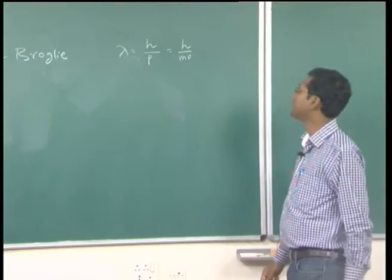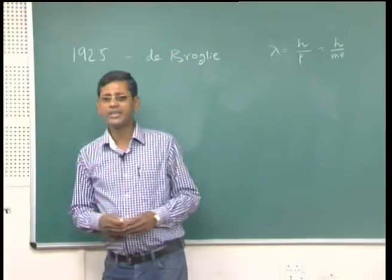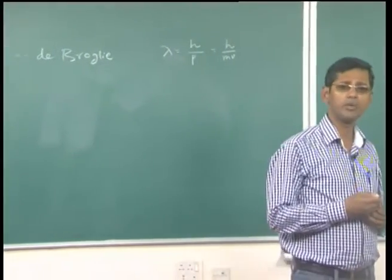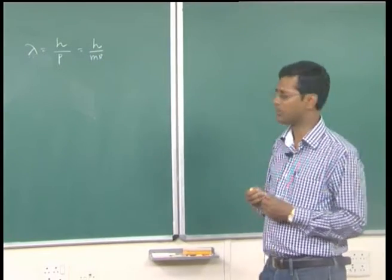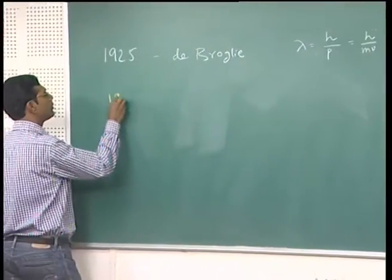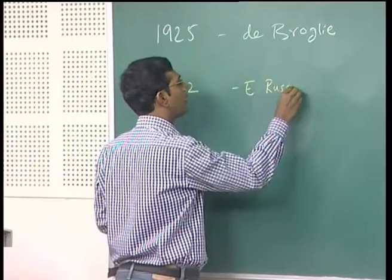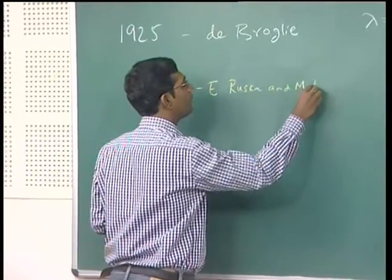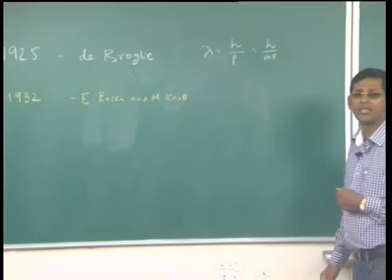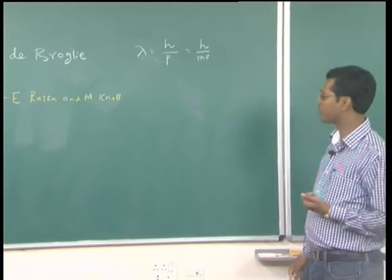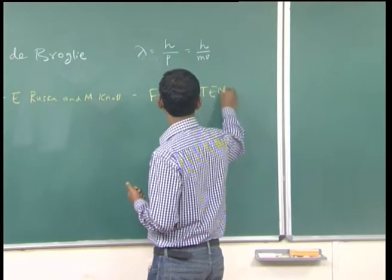We can write this as λ = H/(m·v), where m is the mass of the electron and v is the velocity. By knowing that electrons can behave like a wave, one can use this feature to make use of electrons in a microscope. Within just the next 7 years, in 1932, two scientists E. Ruska and M. Knoll first time demonstrated that electrons can be used as a tool for microscopy, and the first transmission electron microscope was demonstrated.